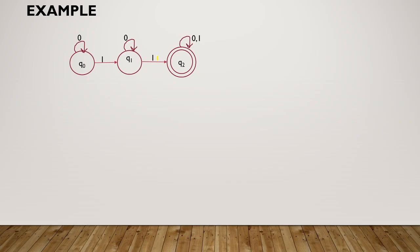Let's look at an example. Here we have a simple DFA. A DFA transition system is a graph where vertices represent states, edges represent transitions of states, and edges are labeled with inputs.